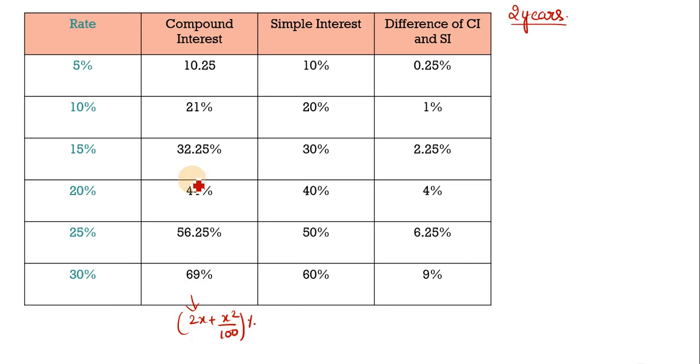That is your 2x plus x squared upon 100 percent. With this, you can easily find the percent which will be found in compound interest. So if I've given 5% interest for 2 years, then what will we do? That is 2 into 5, that is your 10, plus 25 upon 100. So that is your 10.25.